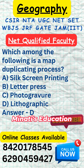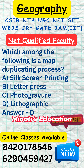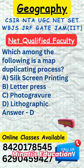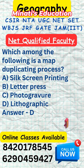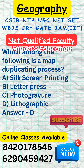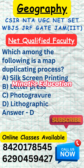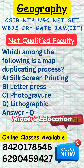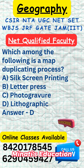4. Printing: the screen is placed on the material to be printed. Ink is applied to the screen and pushed through the stencil onto the material using a squeegee. 5. Curing: the printed material is then dried or cured to set the ink. Silk screen printing is known for its durability and the ability to produce vibrant colors and intricate designs. It is widely used in the textile industry for printing t-shirts, posters, and other promotional items.